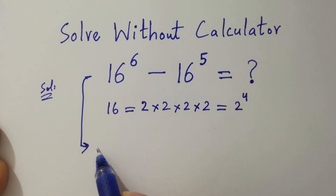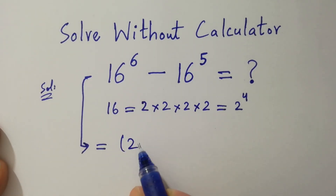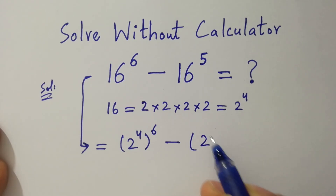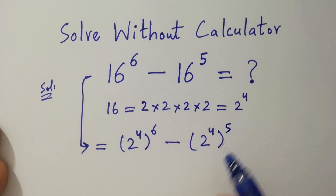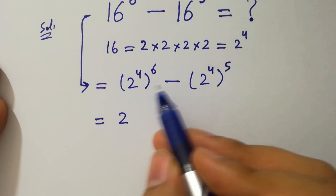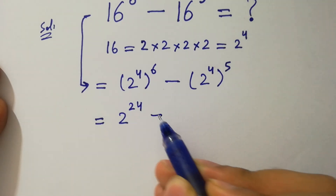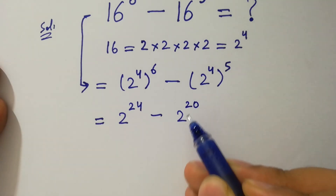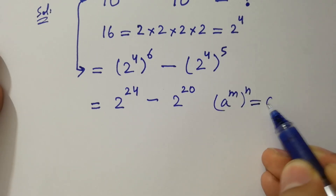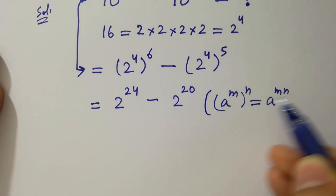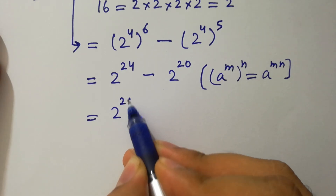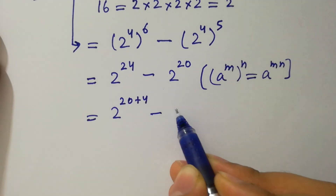Then it can be written as (2 to the power 4) to the whole power 6, minus (2 to the power 4) to the whole power 5. This will be 2 to the power 24 minus 2 to the power 20, since a to the power m, to the whole power n, equals a to the power m times n.